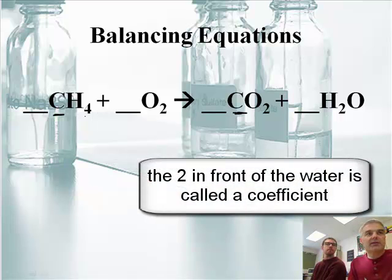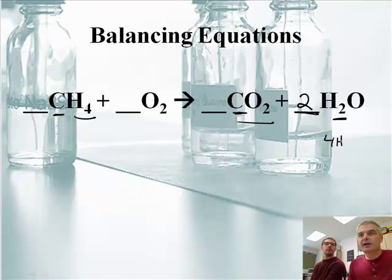And then I'm going to do my Hs. I've got four Hs, and on this side I have two Hs right here. That's not good. So I'm going to change the coefficient. Put a 2 in front. I've got this little line here to help us kind of know where to put the line.